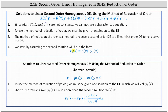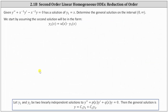We start by assuming the second solution will be in the form y2(x) equals some function u(x) times y1(x), which is the given solution. There is also a shortcut formula to determine the second solution y2(x), which we'll use in a different video. Going back to the problem, we begin by assuming the second solution is y2(x) equals u(x) times y1(x).